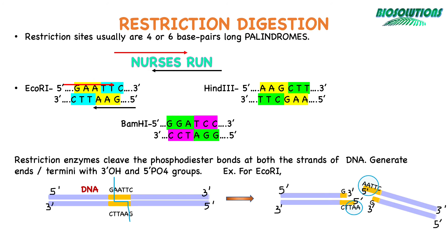These ends are called sticky or cohesive ends. If these ends come in contact with another single-stranded complementary DNA, they can remake hydrogen bonds and can convert into double-stranded DNA again. This property is used in recombinant DNA technique, which we will learn later.